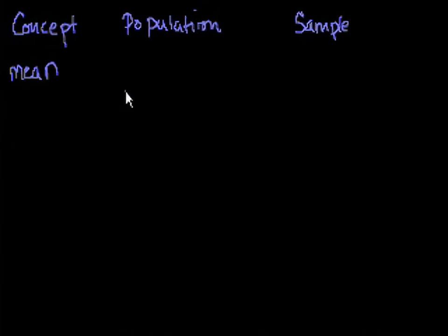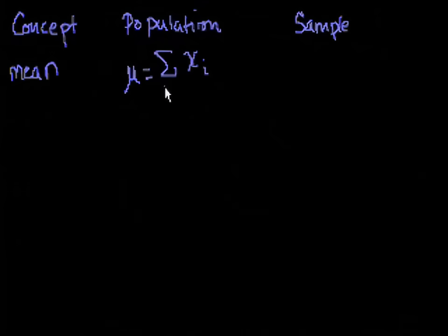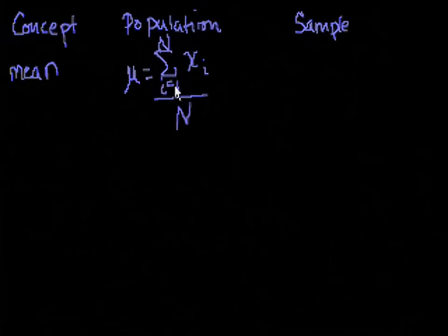The mean of a population, we use the Greek letter mu, which is equal to the sum of each of the data points in the population. You sum from the first one up to the nth one — assuming there are n data points — and then divide by the total number. This is like the average you're used to taking: add up all the data points and divide by how many there are.